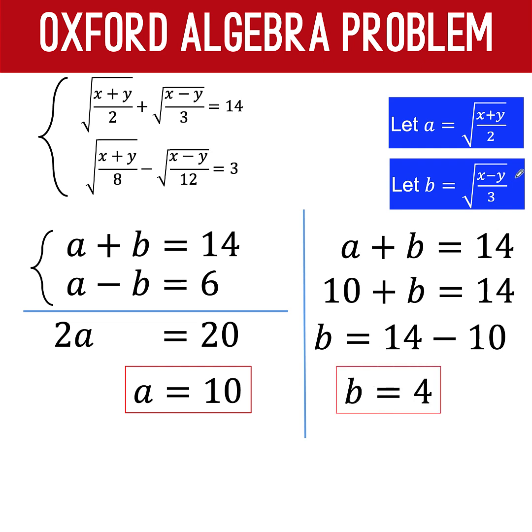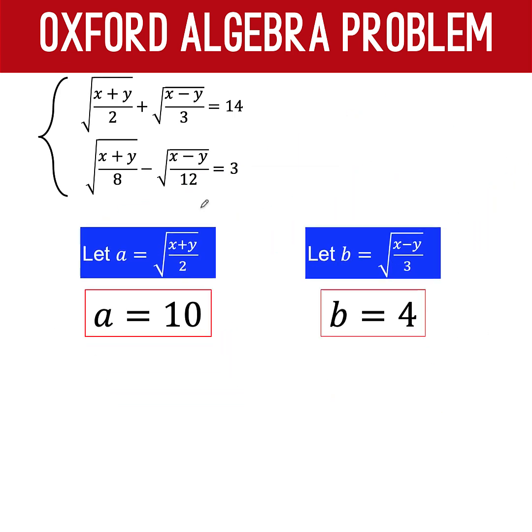But this b is equal to this expression. This 10 is also equal to this radical expression. So, let's put them together. So, since a is equal to 10, we now form this equation. 10 is equal to the square root of x plus y over 2. Similarly here, since b is 4, we now substitute 4 for b to arrive at this equation.